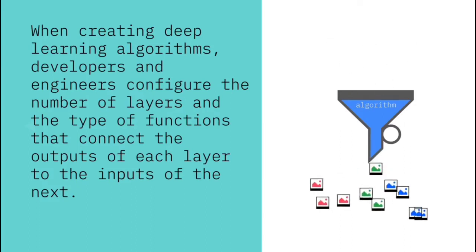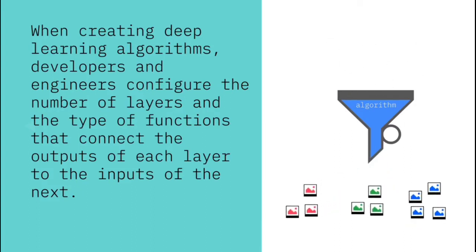The algorithm will run those examples through its layered neural network and adjust the weights of the variables in each layer of the neural network to be able to detect the common patterns that define the images with similar labels.